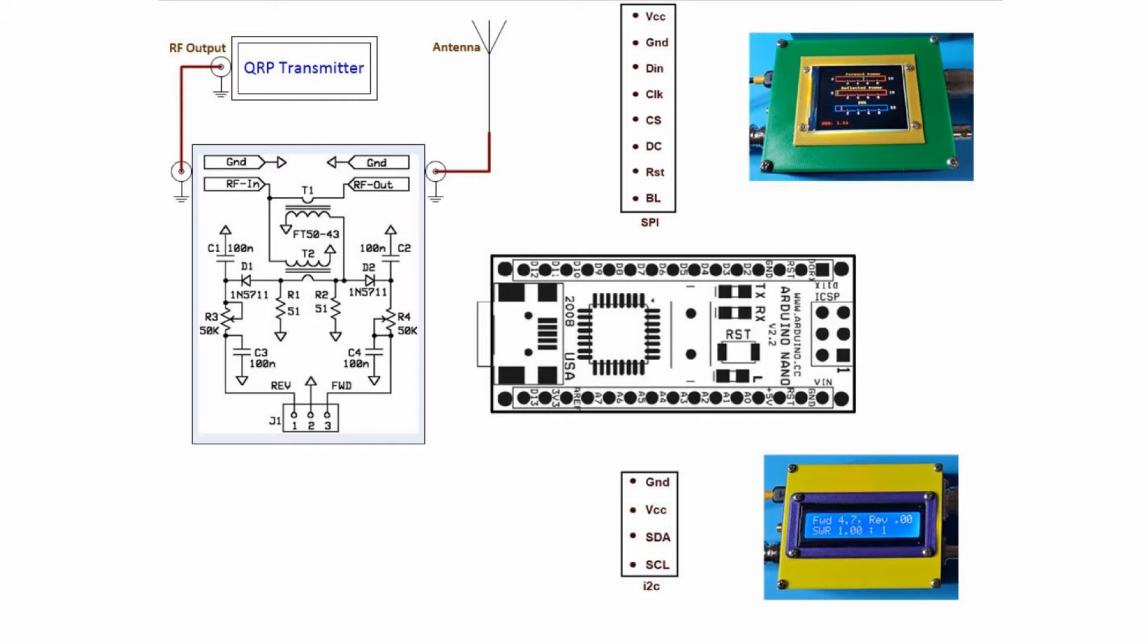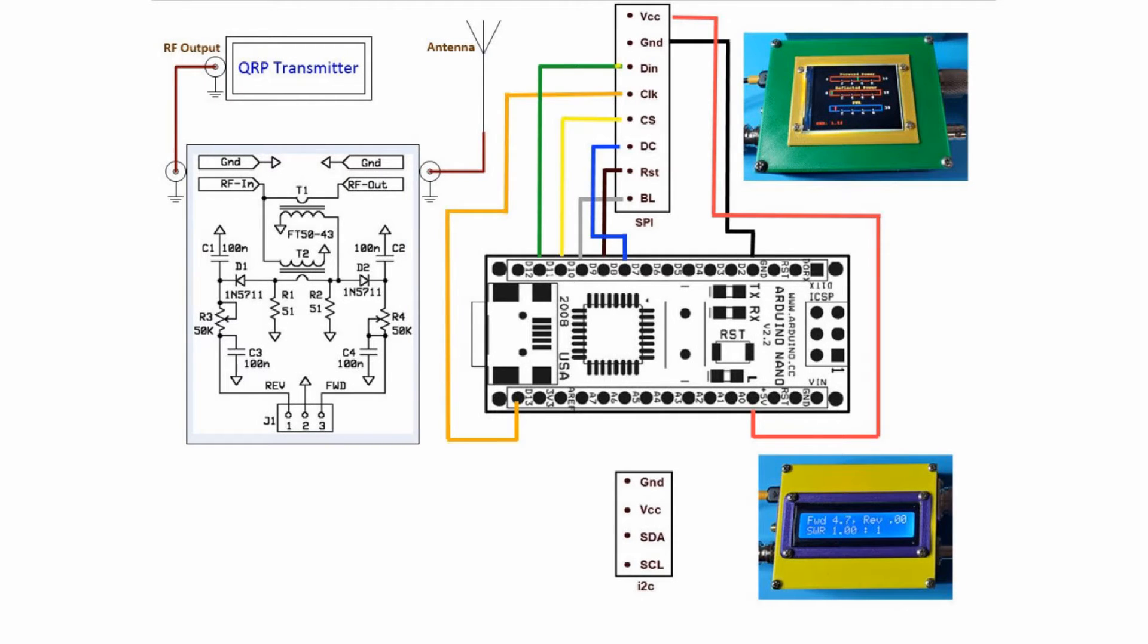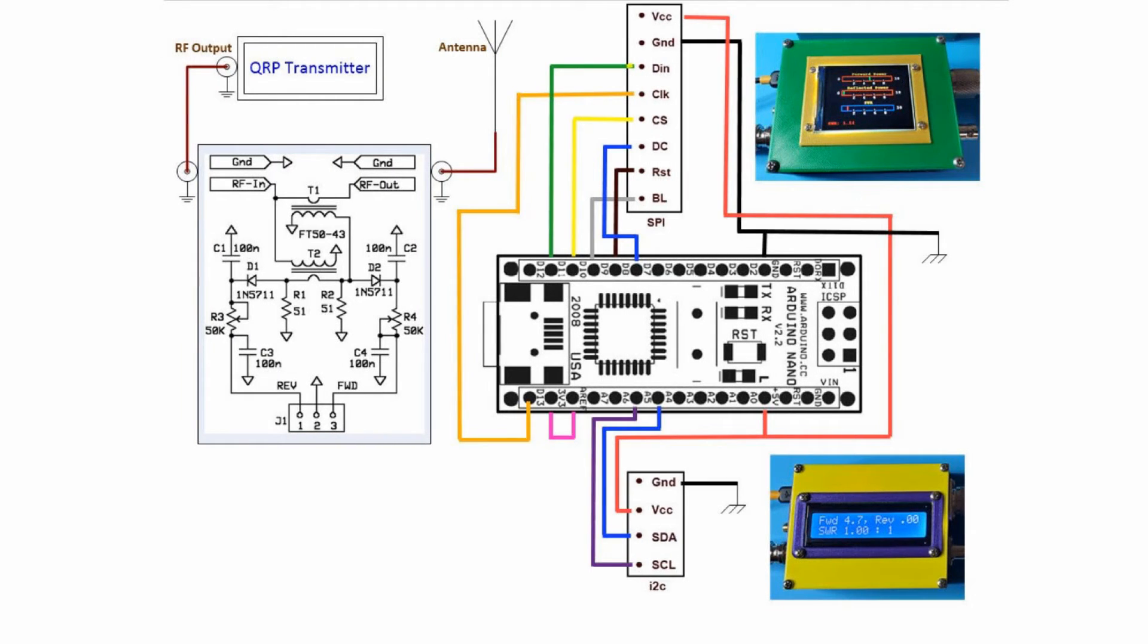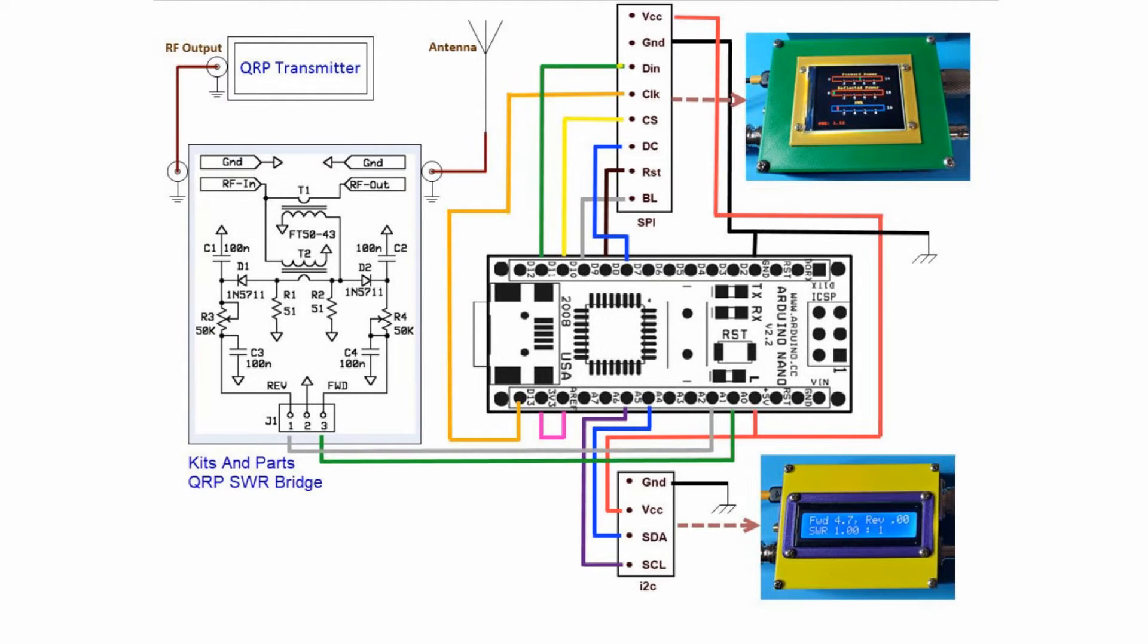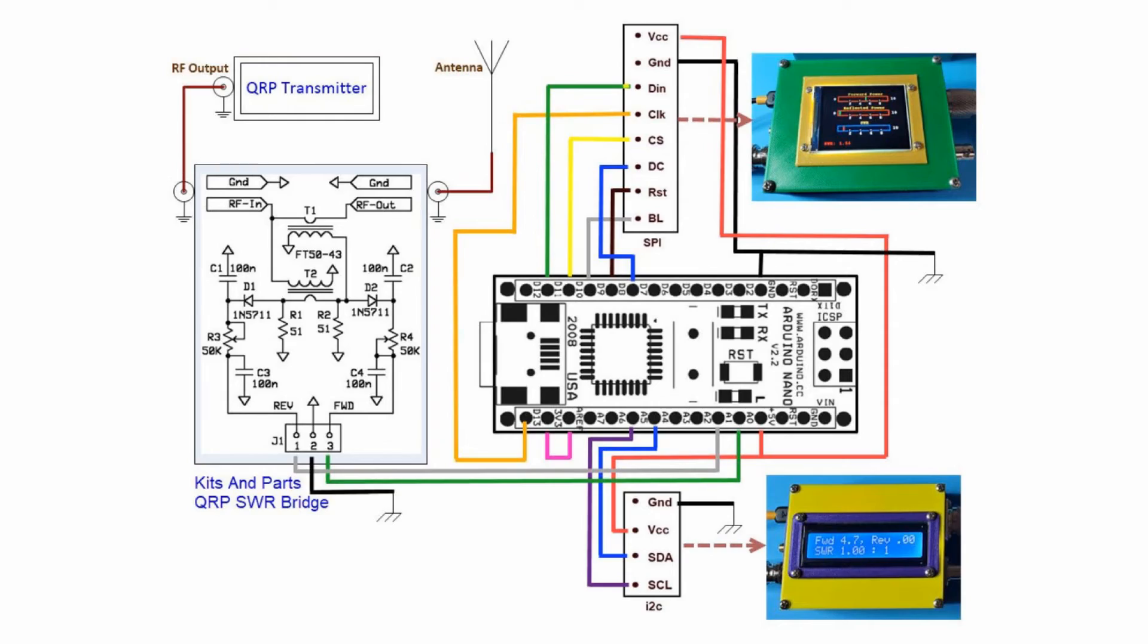Before getting into the nitty-gritty of the circuit, I'll demonstrate how it works with both a QRP transmitter and with one whose RF output is less than a watt.